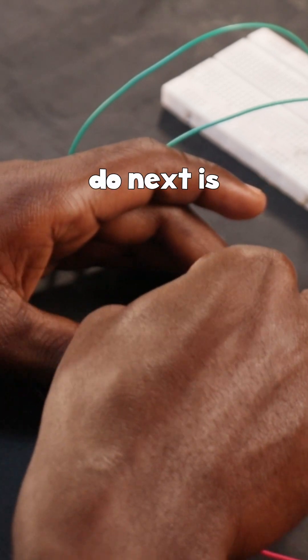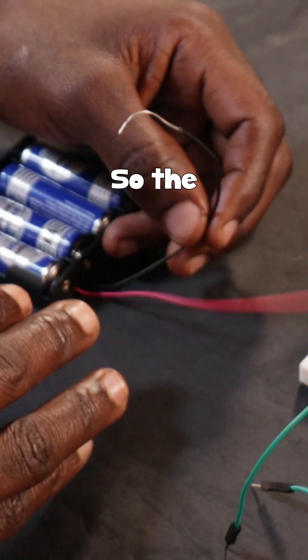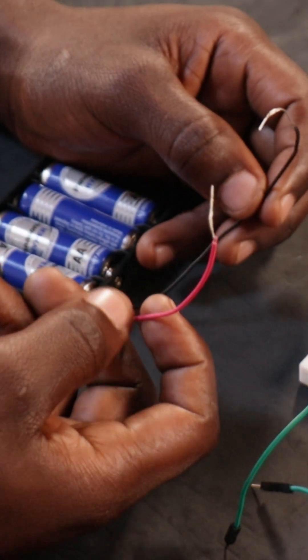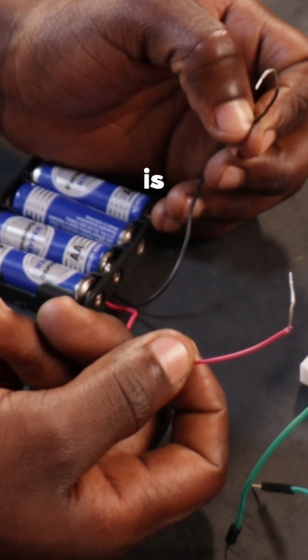Now, what you're going to do next is powering our breadboard. The battery holder has two terminals. Red wire is positive, black wire is negative.